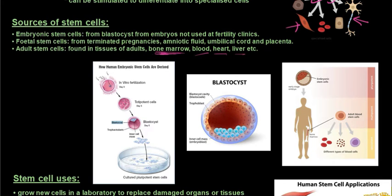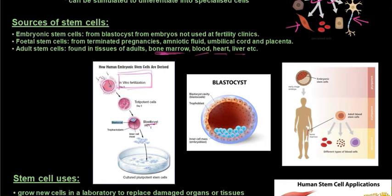Looking at embryonic stem cells using blastocysts: at fertility clinics, people who struggle with fertility have in vitro fertilization. They store and freeze eggs, then use sperm cells so fertilization happens outside the body. The fertilized embryo is then implanted back into the uterus. The stem cells come from the blastocyst — that inner cell mass is used for stem cells because those cells will eventually become specialized cells. These are the undifferentiated cells that they use.